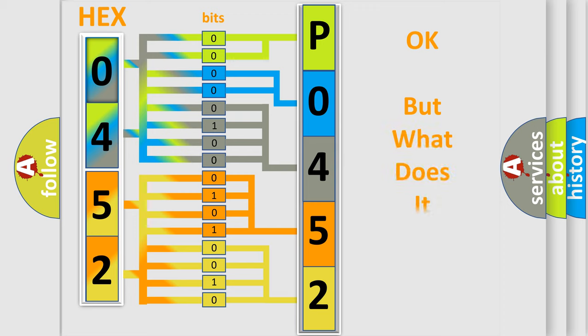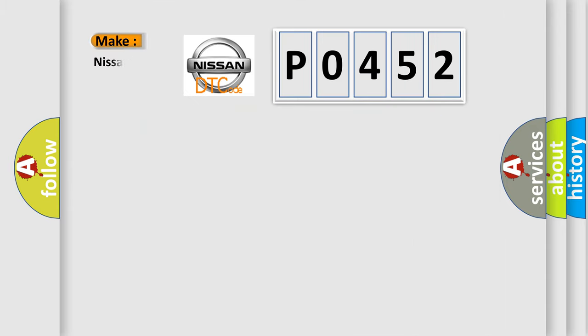The number itself does not make sense to us if we cannot assign information about it to what it actually expresses. So what does the Diagnostic Trouble Code P0452 interpret specifically for Nissan car manufacturers? The basic definition is Lost communication with ECM or PCM.